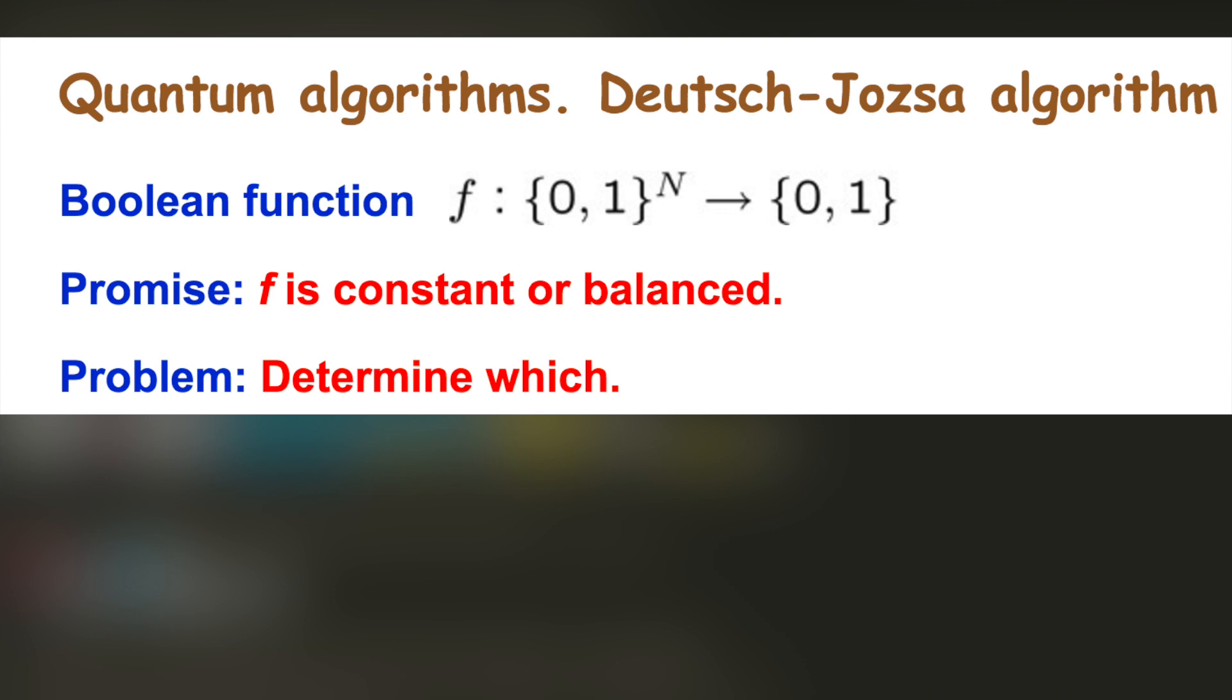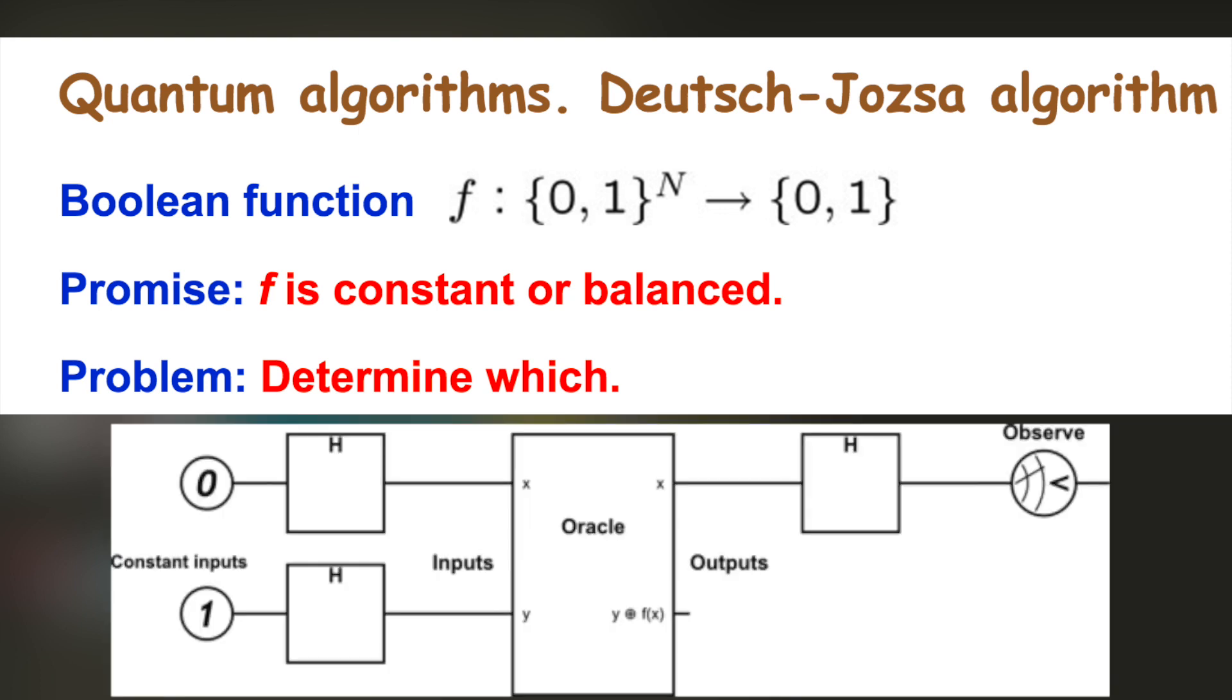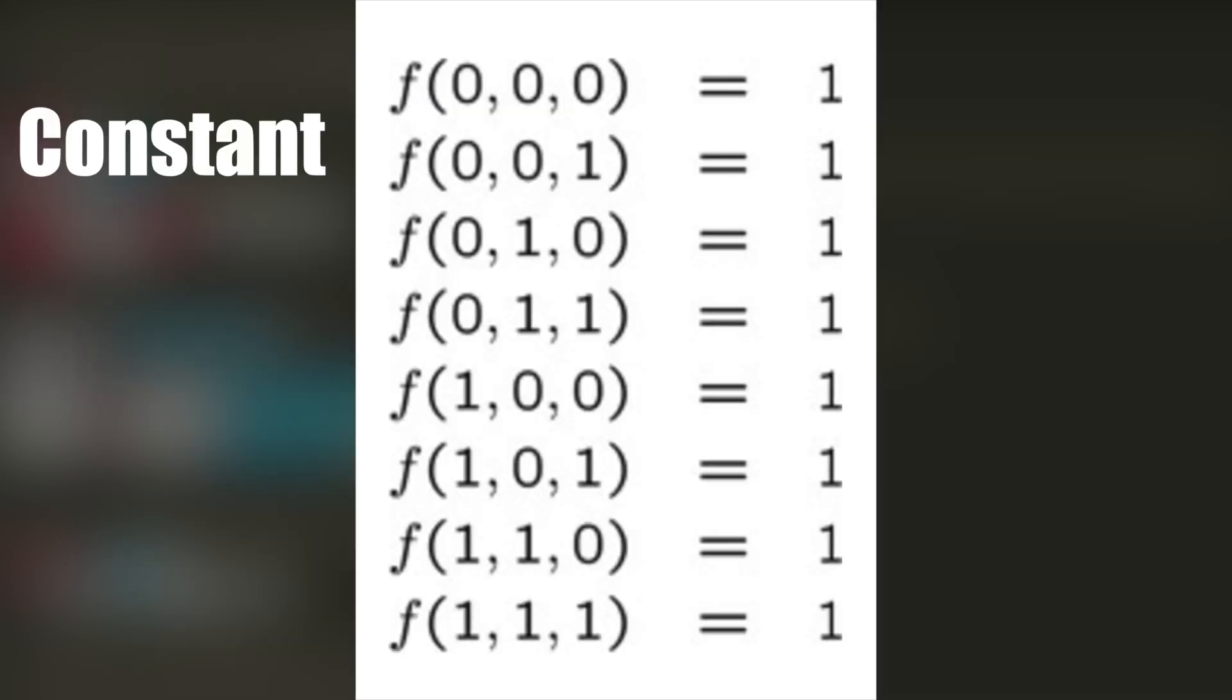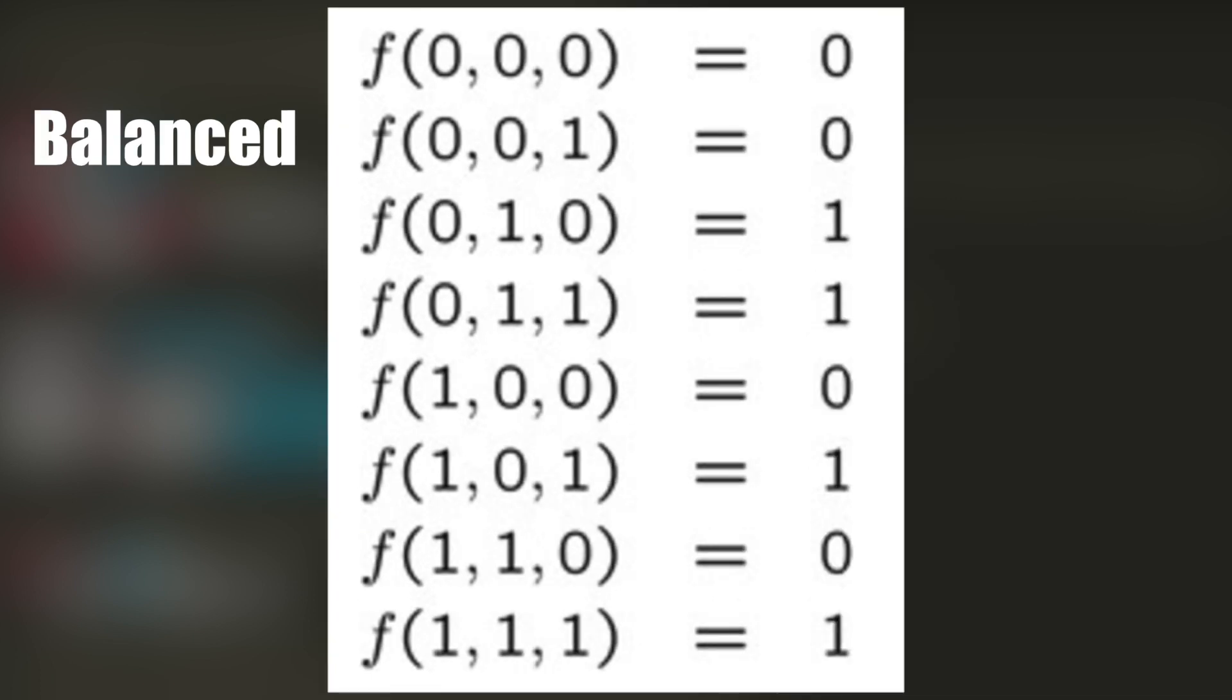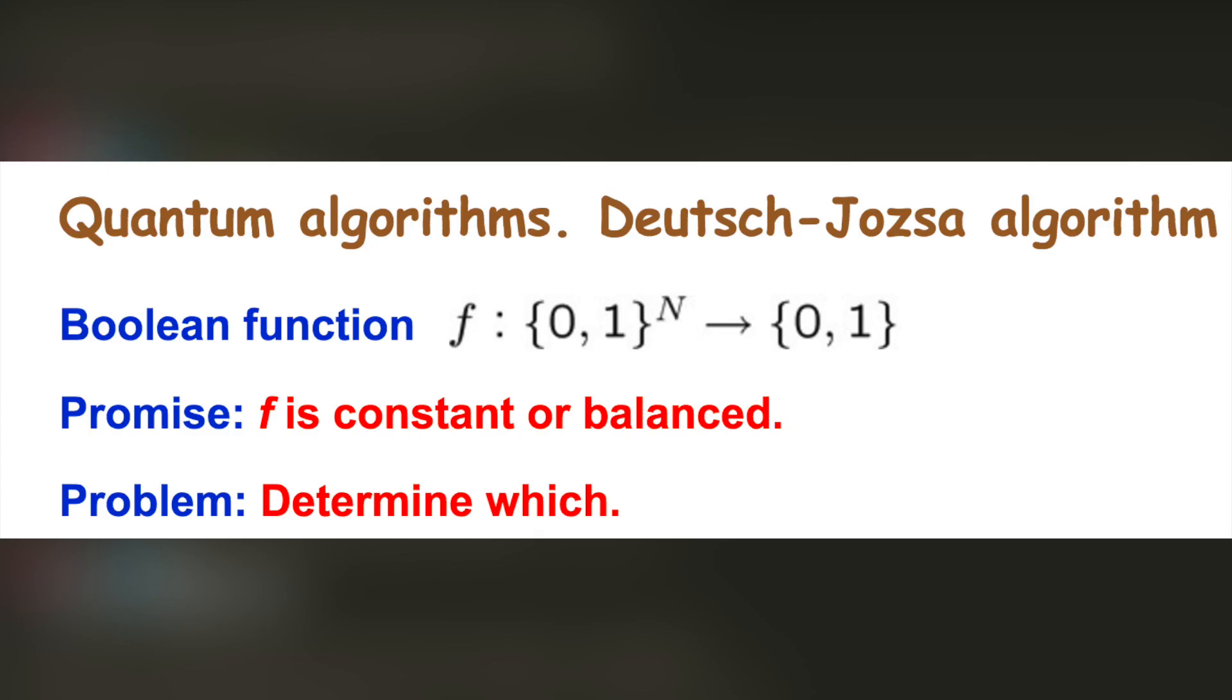We are given a quantum computer known as an Oracle that implements some function F. It takes n-digit binary values as input and produces either a 0 or 1 as output for each value. The function is constant—0 on all inputs or 1 on all inputs—or it could be balanced, so it returns 1 for half of the input domain and 0 for the other half. The task is to decide if F is constant or balanced by using the Oracle.